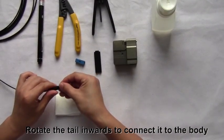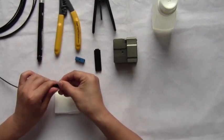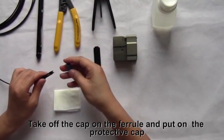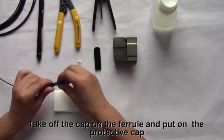Rotate the tail inwards to connect it to the body. Take off the cap on the ferrule and put on the protective cap.